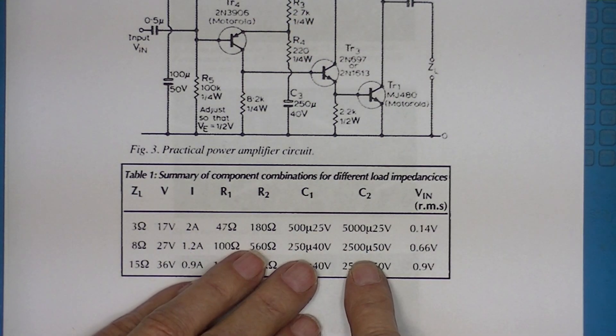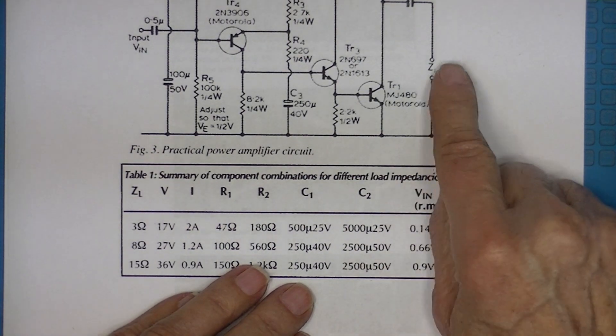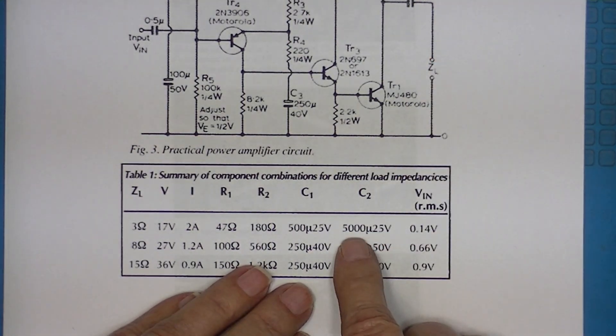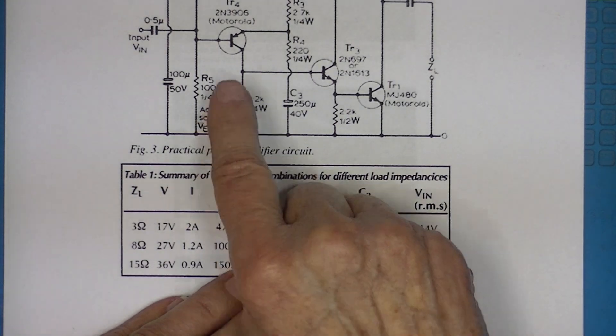The size of the output capacitor varies. When you get below 8 ohms you have to increase the size of that capacitor. Similarly, you have to increase the size of the input capacitor.